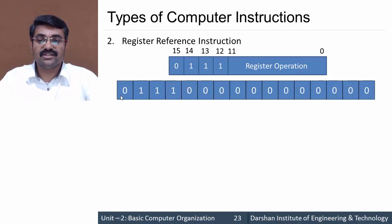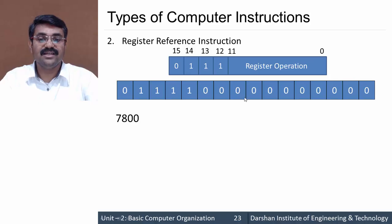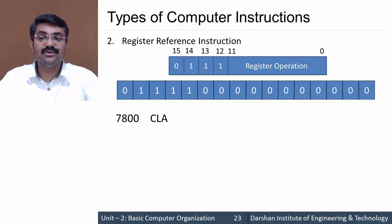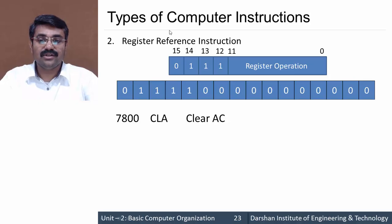Let's look at them one by one. With bits 12-15 fixed as 0111, the first register reference code is 7800 — the 0111 gives hex 7, then 1000 gives 8, and the remaining bits are 0. This code is designated as CLA — clear the accumulator, meaning all bits of the accumulator are set to 0.